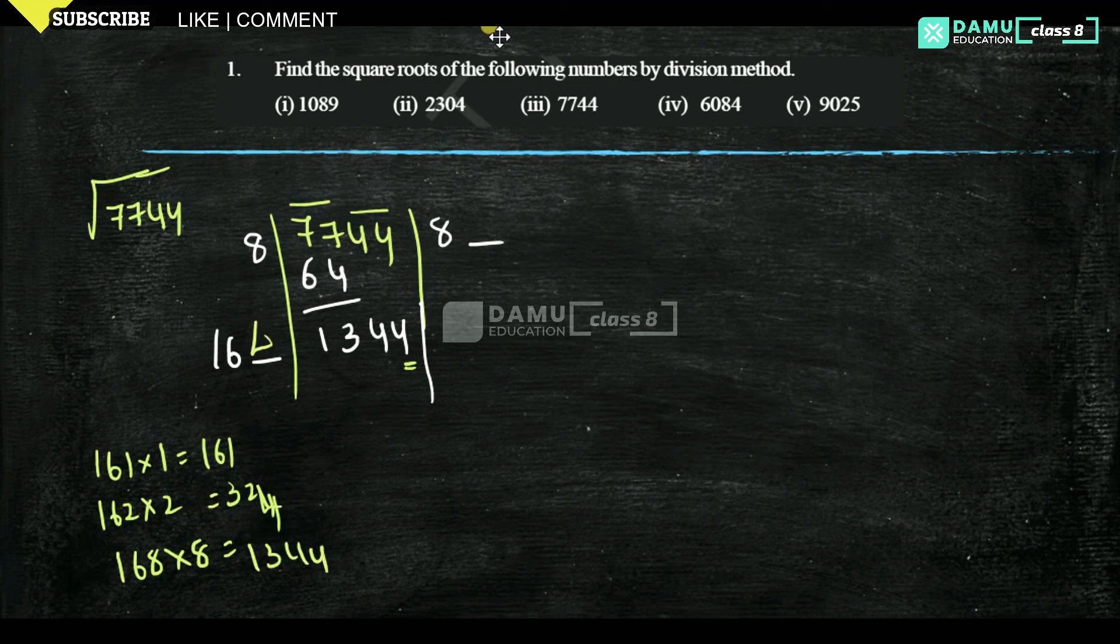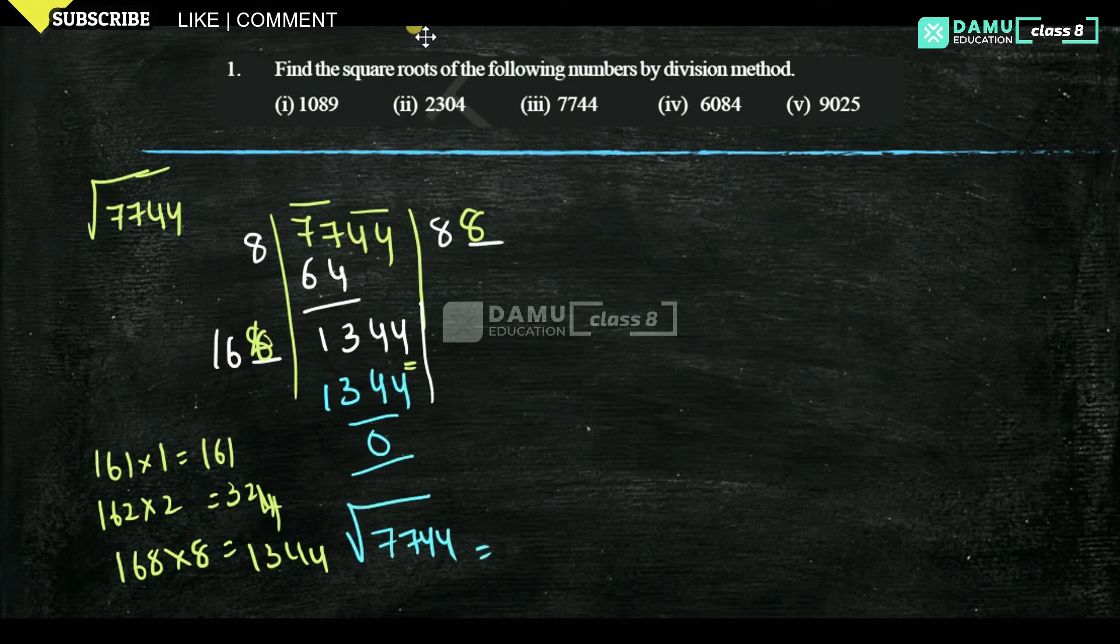Here 168 into 8, then 1344, that will become 0. That means square root of 7744 equals 88. So the quotient is 88. That is the answer.